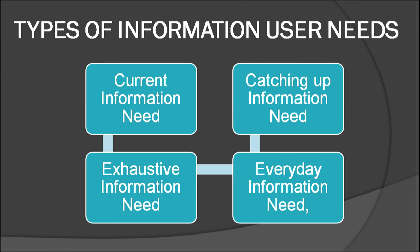Information needs usually vary from person to person, and a user may have varied needs at different points of time. When users need the latest developments in their area of interest on a regular basis, the need is known as current information need. When users want exhaustive information on a particular topic, the need is known as exhaustive information need, usually required by researchers. Everyday information need is for specific information required in day-to-day activities, generally for factual information available in standard reference books. Catching up information need arises when a user not conversant with a particular subject requires an overall account of its development in short and compact form.